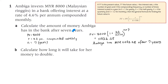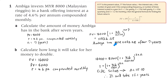Part A: Calculate the amount of money Ambiga has in the bank after 7 years. Present value is 8,000. R is 4.6, compounded monthly, so K is 12. N is 7. Putting it in the formula, we get 11,032 Ringgits and 28 cents.